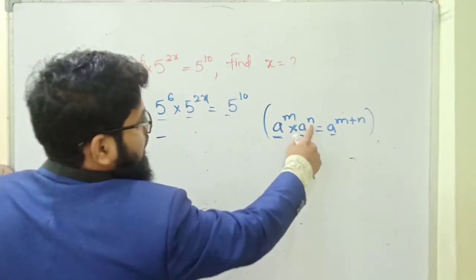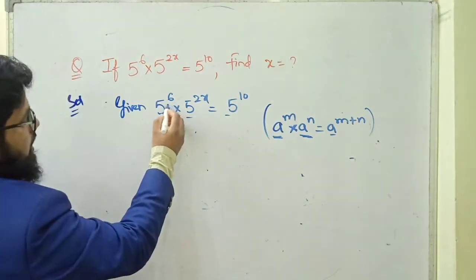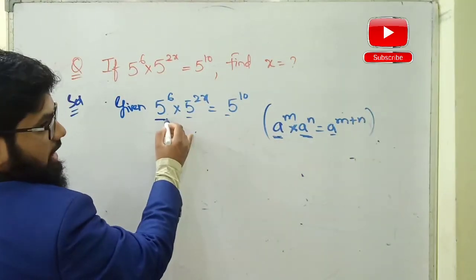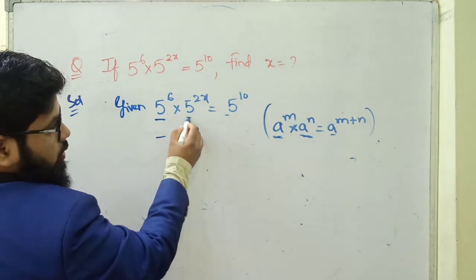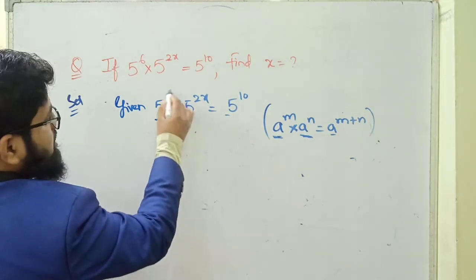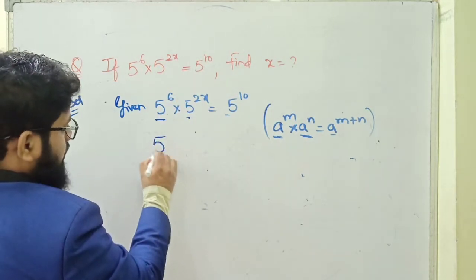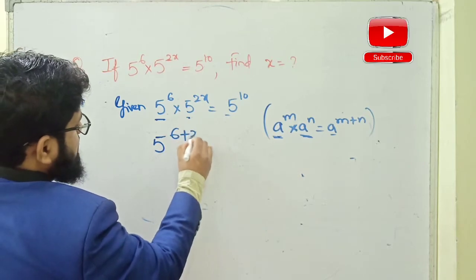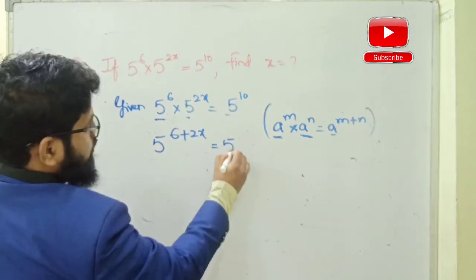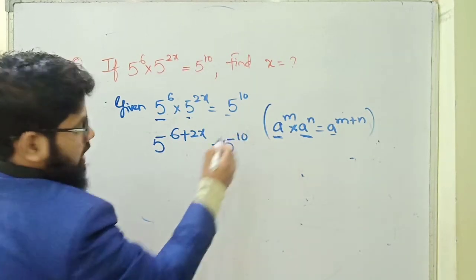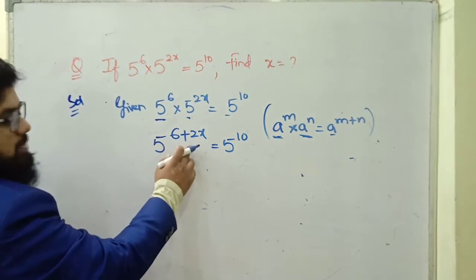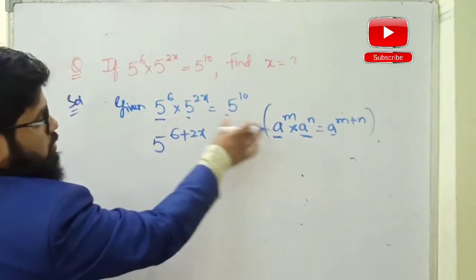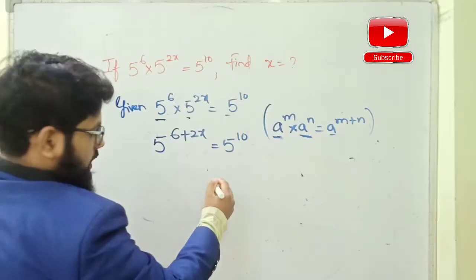Whenever bases are same, write the base one time and add the powers. The power here is m+n. Comparing this formula with our problem: five is the base, powers are 6 and 2x, so write five one time and add: 5^(6+2x) is equal to 5^10.